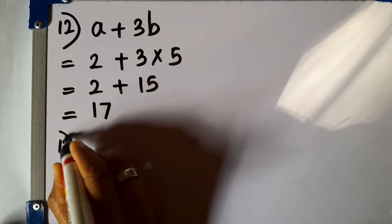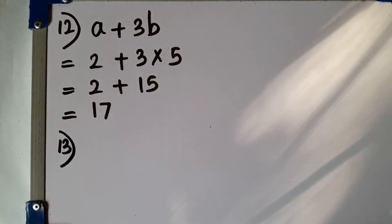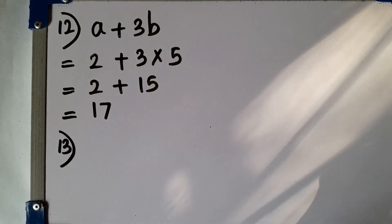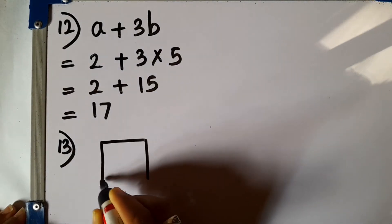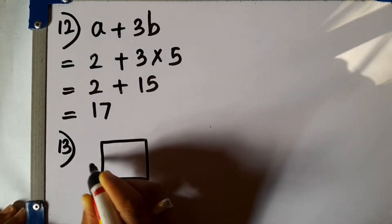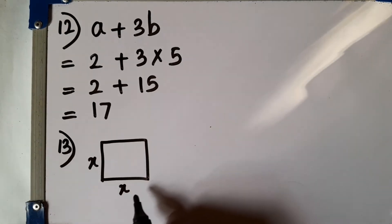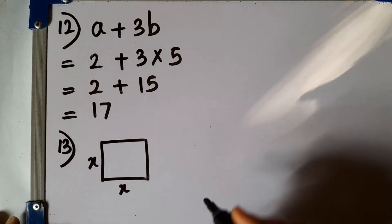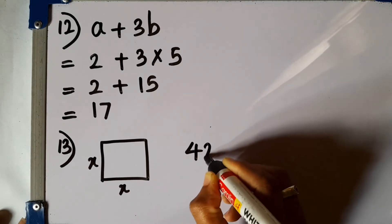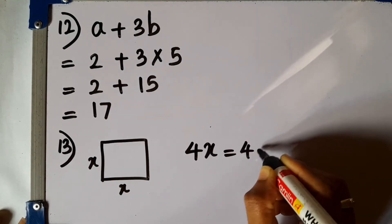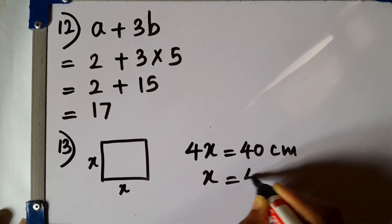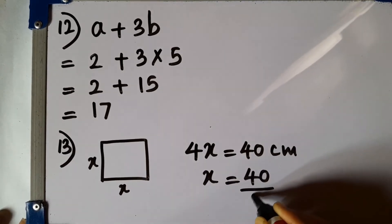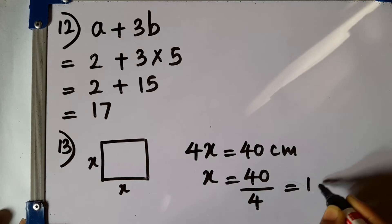Question number 13. Find the area of a square-shaped classroom if the perimeter is 40 centimeters. I will take the length of one side as x. So I can write 4x equals 40 centimeters. Then x can be found by 40 divided by 4. That is 10 centimeters.